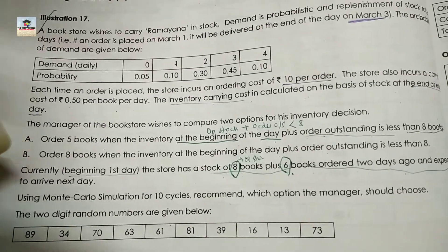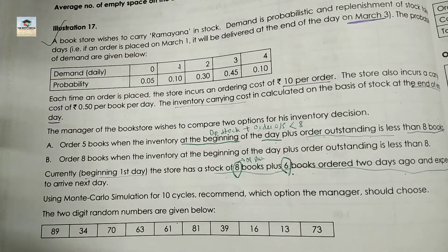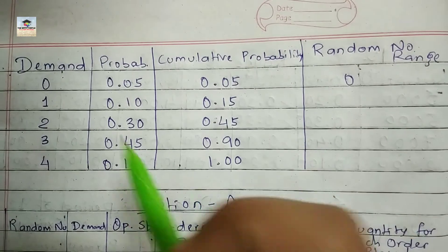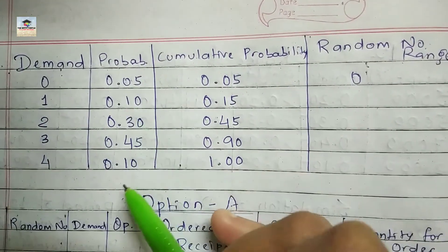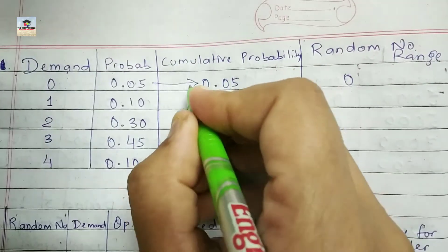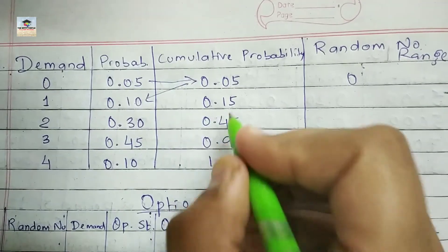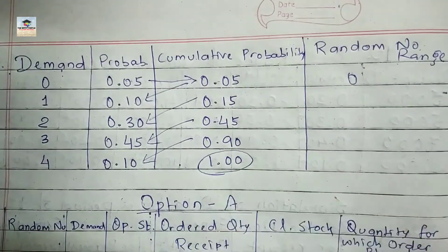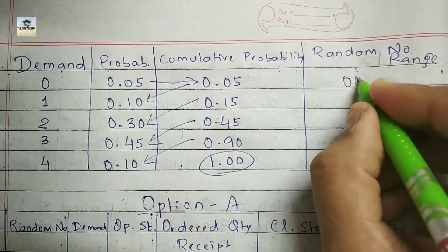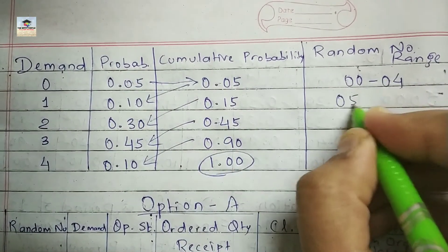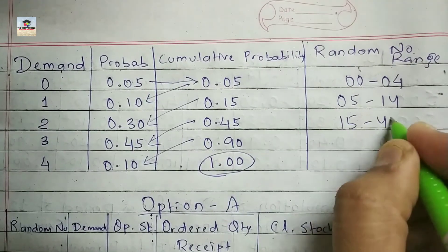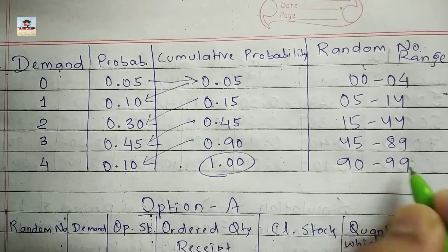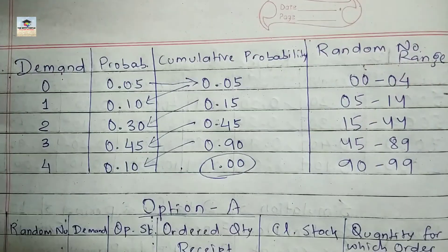To start the solution, first we build the probability distribution table. Demand values are zero, one, two, three, four. From the given probabilities, calculate cumulative probability: 0.05, 0.15, 0.45, 0.90, and 1.0. Then calculate the random number ranges: 00–04, 05–14, 15–44, 45–89, and 90–99.